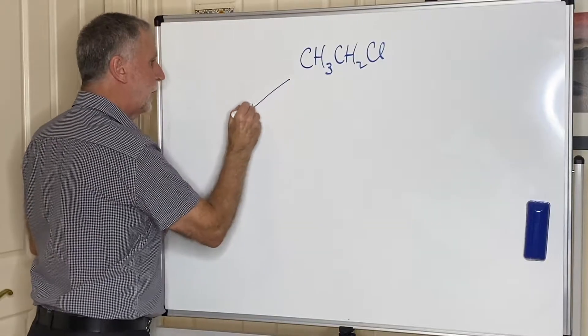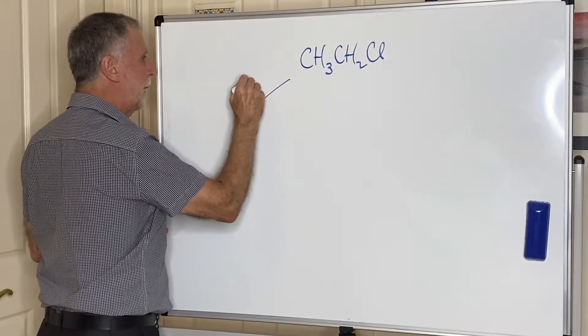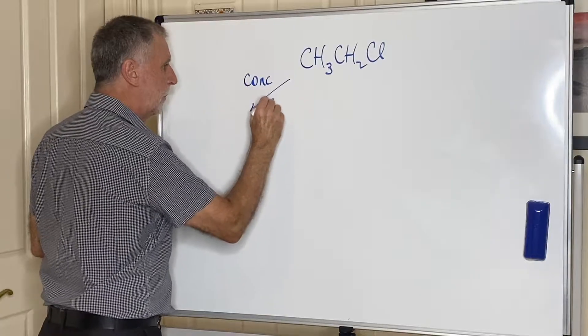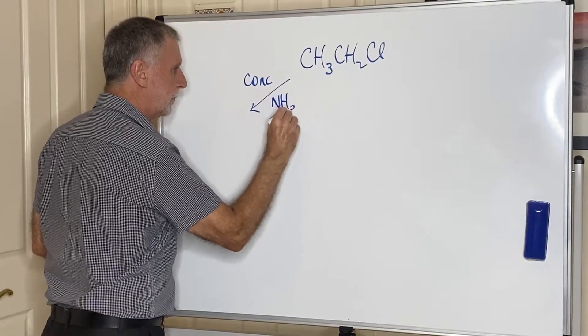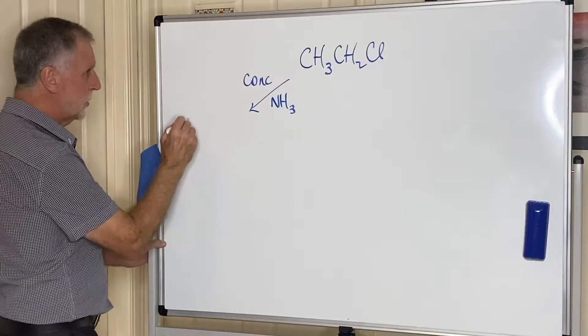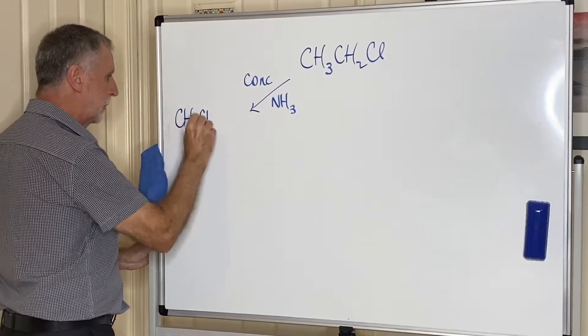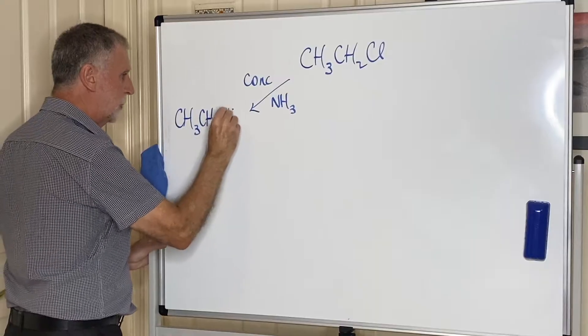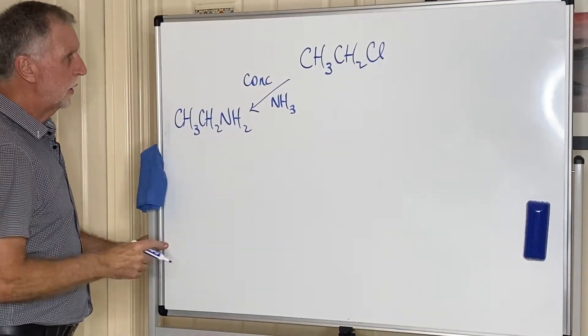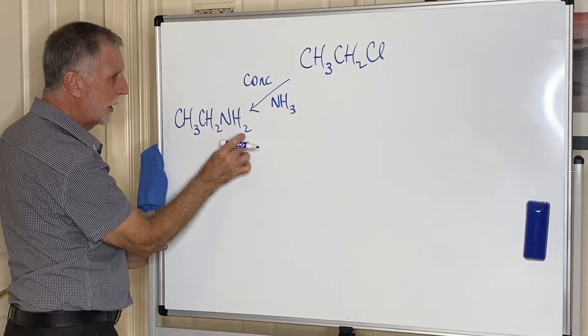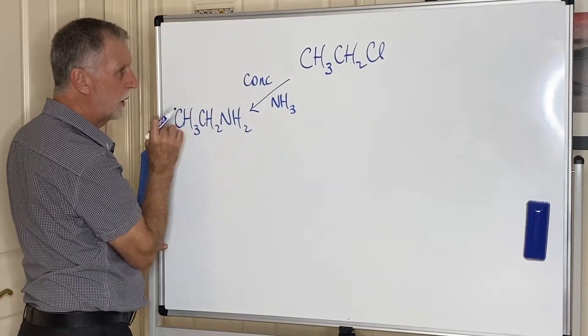So, first reaction they can undergo, if you react them with concentrated ammonia, they will turn the chlorine into an NH2 group, in other words, an amine. So, chloroethane becomes ethanamine, concentrated ammonia.